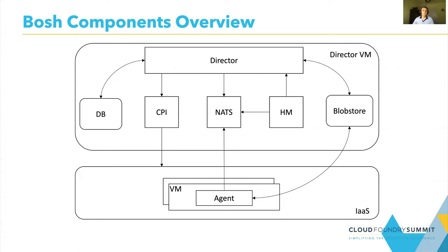On the director VM you have different components. The main one is the director — it's responsible to orchestrate everything and also to provide the HTTP endpoints to the outside world. The database is there to store the director state. CPI is used to communicate with the supported infrastructures and the message bus is here for communication between the components. Health monitor is responsible to keep the director instances healthy and the blob store is there to store releases and compiled artifacts. Also, on every provisioned VM by the director, there is an agent, and the agent can communicate with the director via the message bus. Today we will talk about metrics for the director VM itself, metrics for the director, and also metrics for the other components which we see on the diagram.